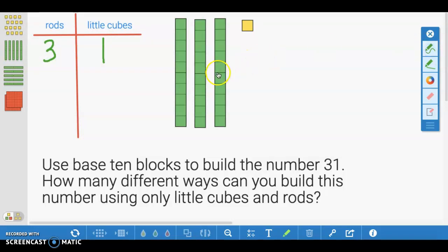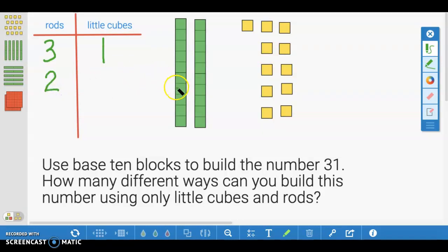Now, we can represent this in another way by breaking apart this rod into 10 little cubes. So we have 1, 2, 3, 4, 5, 6, 7, 8, 9, 10 little cubes. So now we have two rods for 10, 20, and we have 11 little cubes.